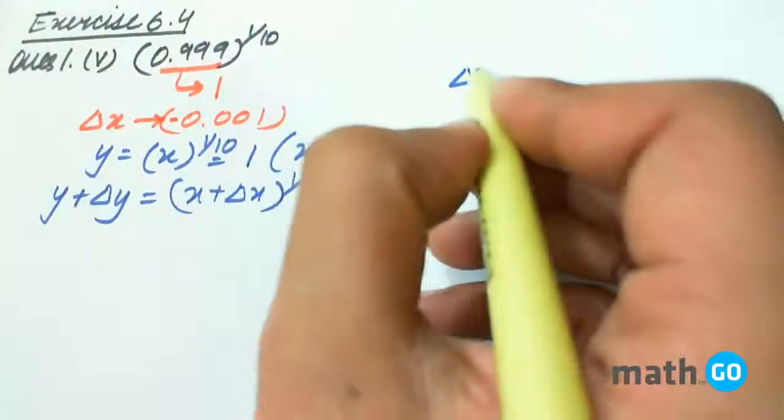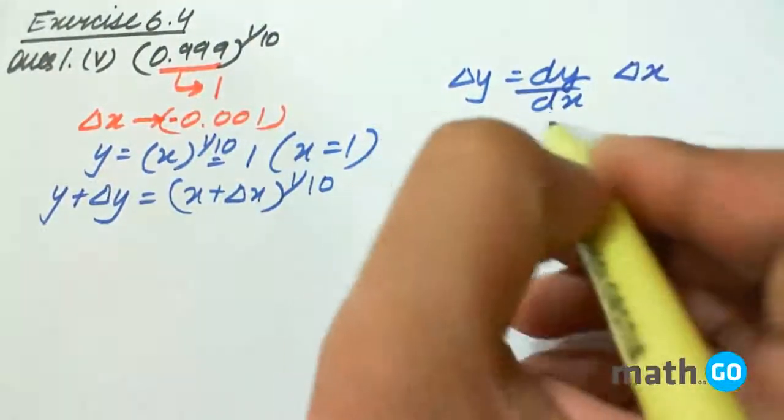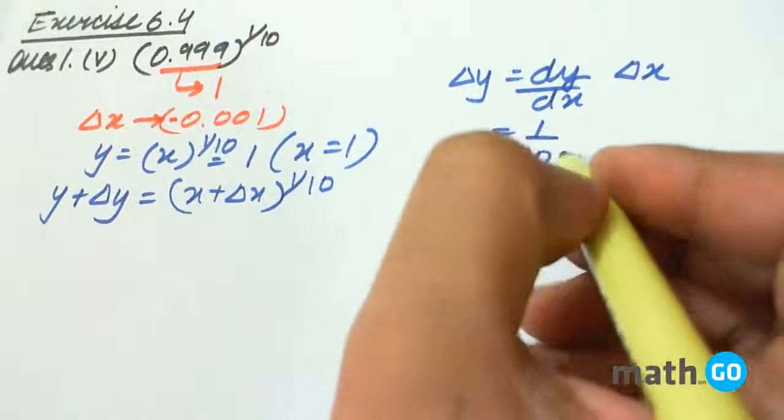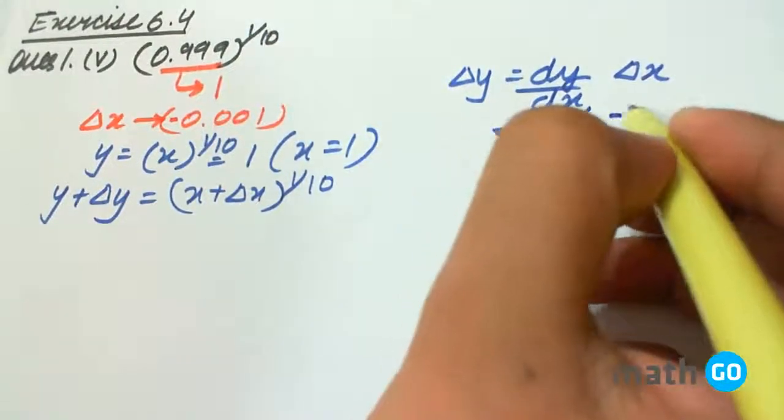So we have to find delta y, that is dy by dx into delta x. So that is 1 by 10 into x to the power 9 by 10 into delta x, that is minus 0.001.